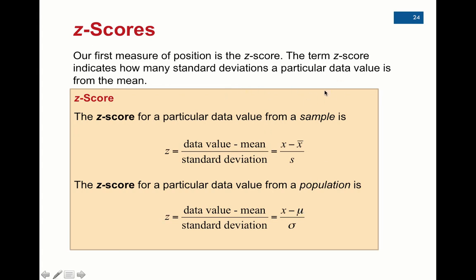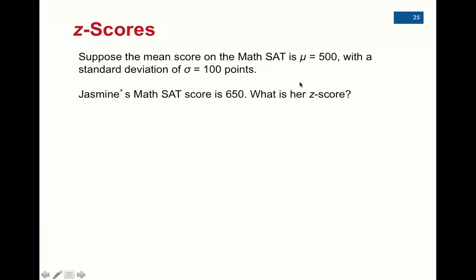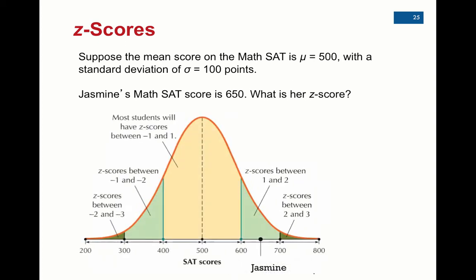That gives us how many standard deviations a particular data value is from the mean. For example: the math SAT is designed to have a mean of 500 and a standard deviation of 100 points. Jasmine's math SAT score was 650. SAT scores are normally distributed, following the shape of a bell curve. The mean of 500 goes in the middle, and we count off by 100s: 600 is one standard deviation above the mean, 700 is two, 800 is three; and 400 is one standard deviation below the mean, 300 is two, and so on.